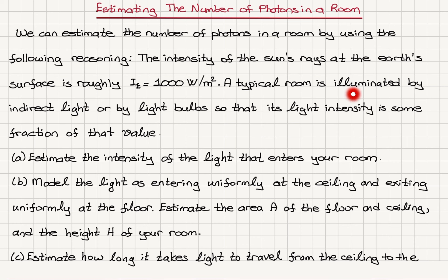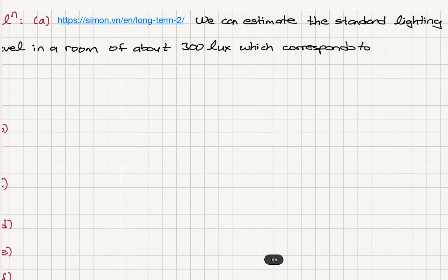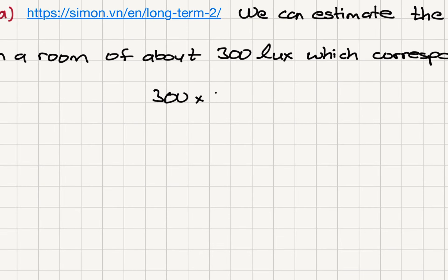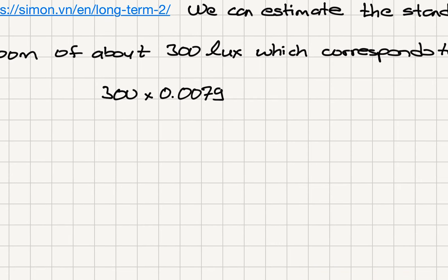A typical room is illuminated by indirect light or by light bulbs, so that its light intensity is some fraction of that value. For part a, we estimate the intensity of the light that enters your room. According to this website, we can estimate the standard lighting level in a room at about 300 lux. This corresponds to 300 times 0.0079 watts per meter squared, giving us 2.4 watts per meter squared intensity.